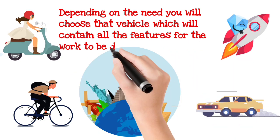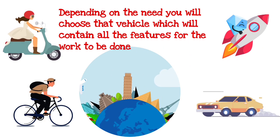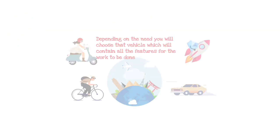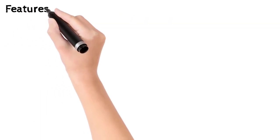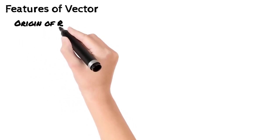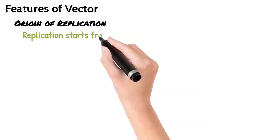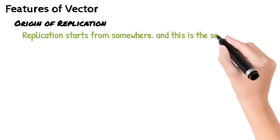So depending on the need, you will choose that vehicle which will contain the features for the work to be done. The concept is quite similar here - we want some features to be there in the vectors which can be used for genetic engineering, like origin of replication.